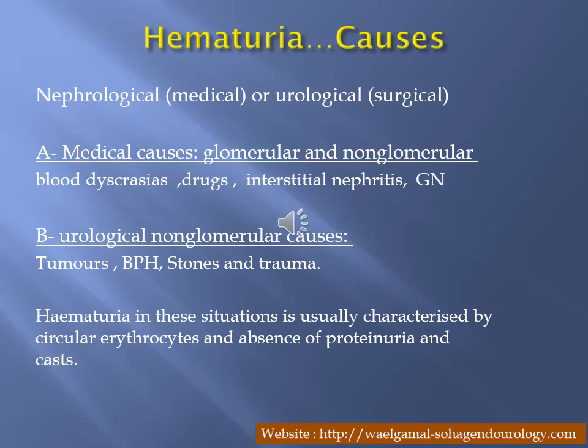Hematuria may be due to medical causes — something in the kidney — or urological causes, called surgical hematuria. Medical causes include glomerular or non-glomerular conditions like schistosomiasis, interstitial nephritis, and glomerulonephritis. When a child presents with hematuria, think of glomerulonephritis. Urological causes include tumor, prostate, stone, and trauma — all these should be investigated. In medical hematuria, it is mainly associated with RBC casts and may also be associated with proteinuria.